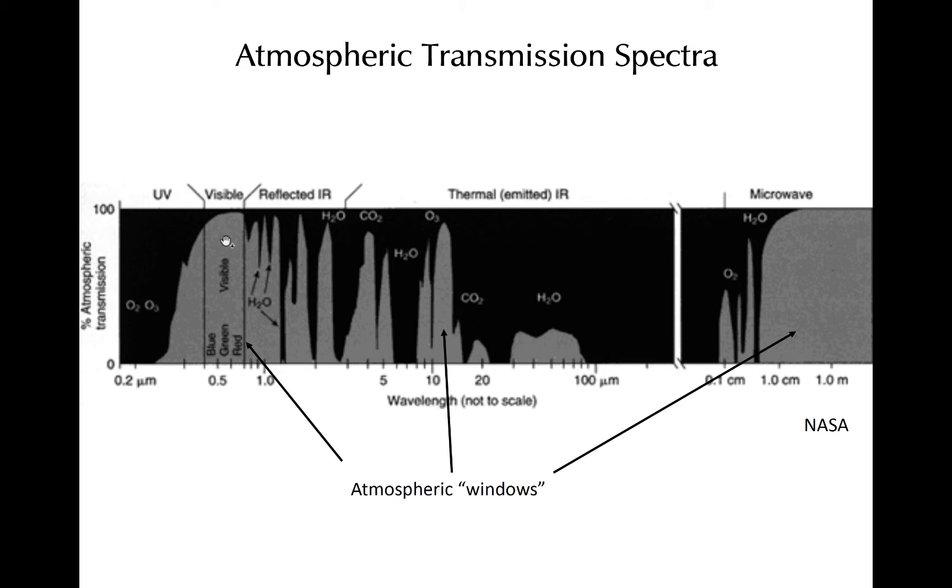This happens in particular in the visible part of the spectrum, and also in parts of the microwave. In the infrared, there are several bands, or ranges of wavelengths, in which the atmosphere is relatively transparent.